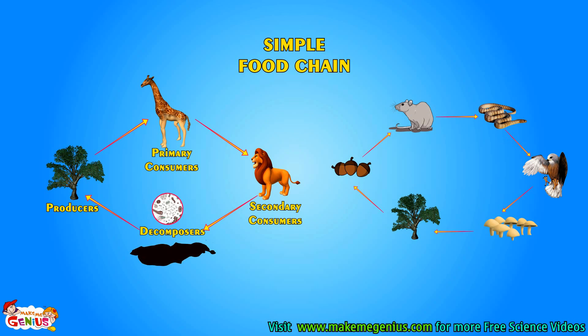The food chains which we saw, which have one producer, one primary consumer, and one secondary consumer, are called simple food chains.